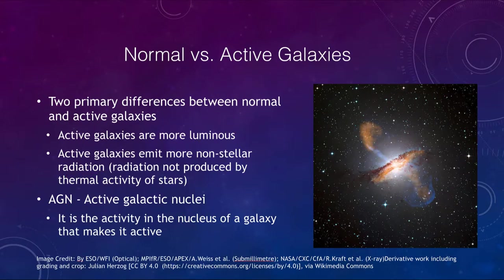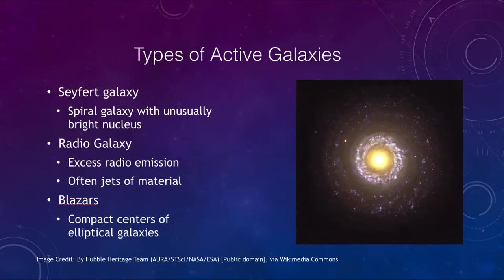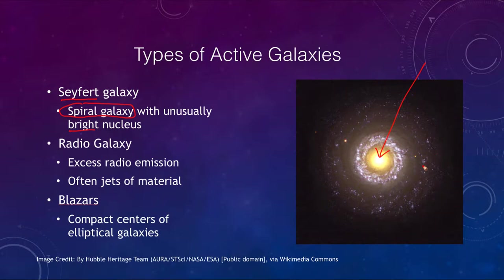Let's look at some examples of types of active galaxies. One example would be what we call a Seyfert galaxy. These are essentially spiral galaxies with an unusually bright nucleus — a lot brighter than we would normally expect for a typical spiral galaxy. They can often also be associated with extensive bursts of star formation, so you can sometimes see intense regions of star formation as well.